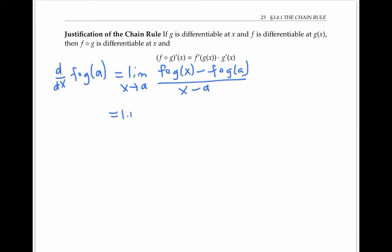I'll rewrite this slightly. And now I'm going to multiply the top and the bottom by G of x minus G of A. That doesn't change the value of the expression provided that G of x minus G of A is not zero. That's the detail I'm sweeping under the rug here and why this is not a real proof, but just a more informal explanation.